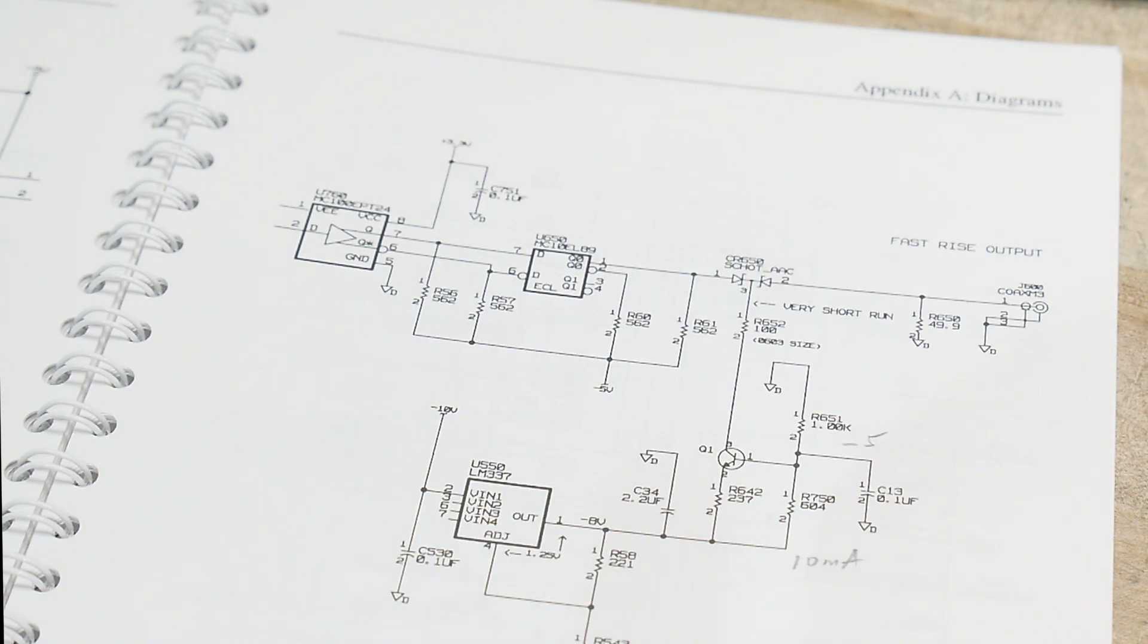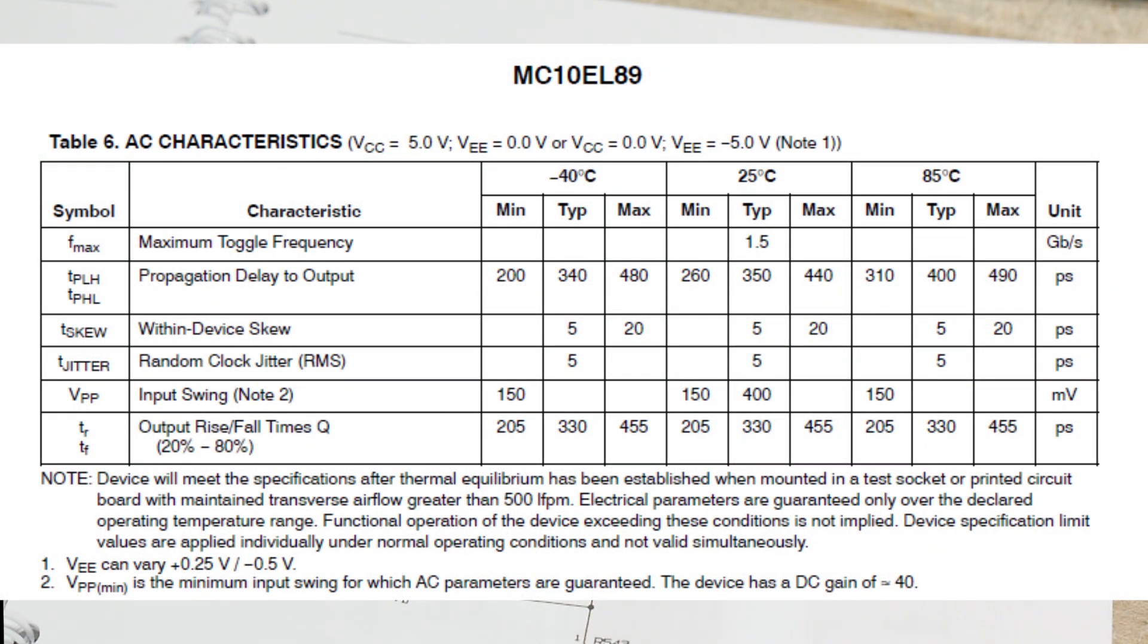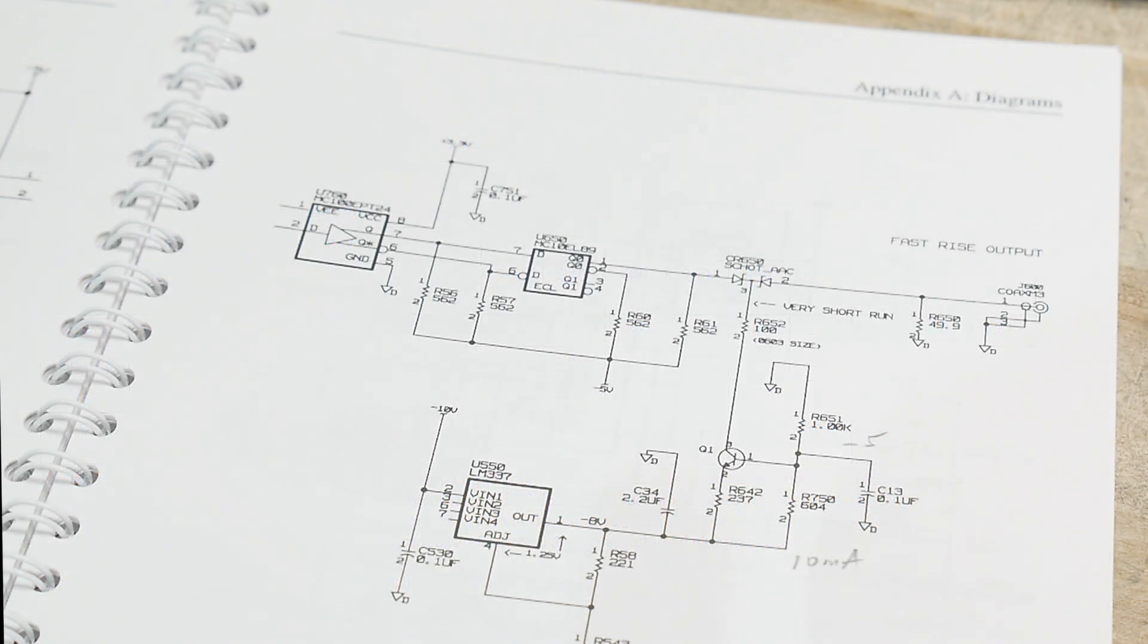If you look at the data sheet of that coax driver, it's only like 300 picoseconds typical. So somehow they're squeaking out more performance than the data sheet says. One of the tricks might be that funny transistor down there at the bottom.